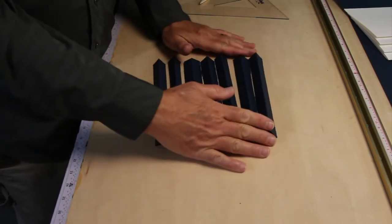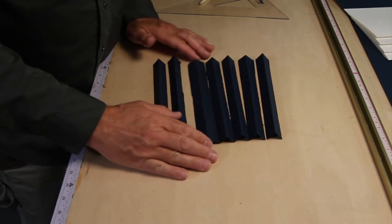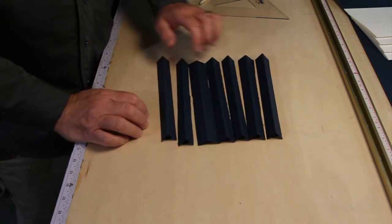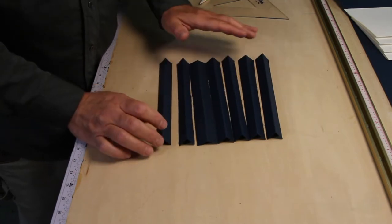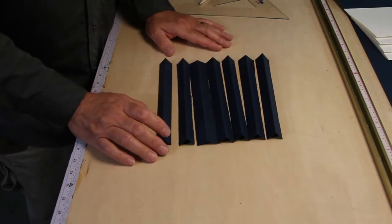So starting with a sheet of paper that was ten and a half inches, I ended up with seven different little hinges. And so now let's make the folios.